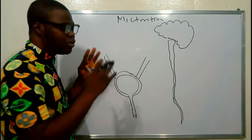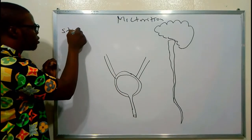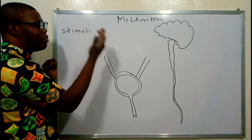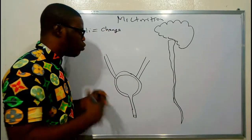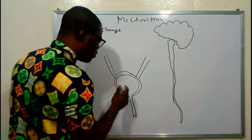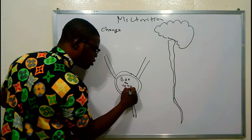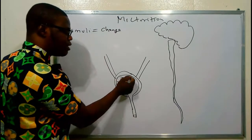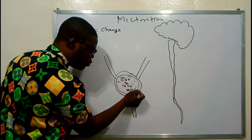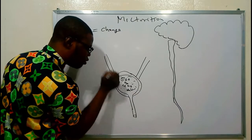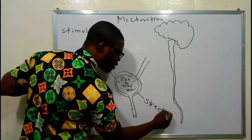For micturition to occur, for urination to occur, there must be a stimulus — a change. The change is that urine of about 300 to 400 mL is going to accumulate within the urinary bladder. On the wall of the urinary bladder we have cells called baroreceptors, or stretch receptors.